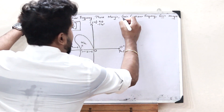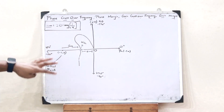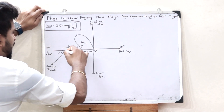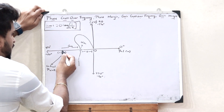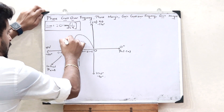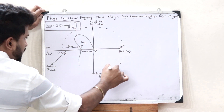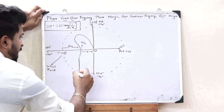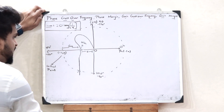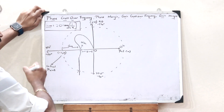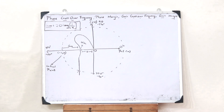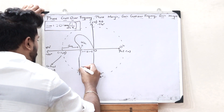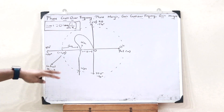Next, we have to find the gain crossover frequency and the phase margin. In order to find the gain crossover frequency, we draw a unit circle with 1 as the radius. It passes through the critical point because the magnitude there is 1. We draw the unit circle with a radius of 1 unit. This particular plot intersects the unit circle at a particular point, and that point is simply what you refer to as the gain crossover frequency, omega gc.